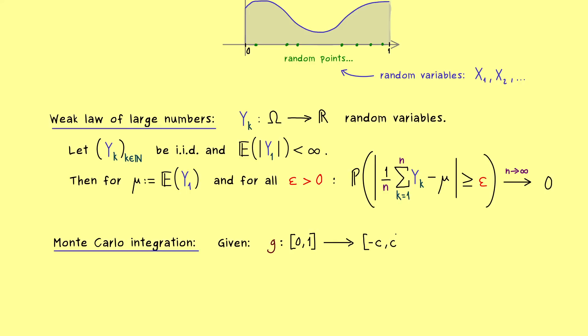And maybe we can also assume it's a bounded function where the bound is given by a number c. Hence we can say it definitely maps into an interval [-c, c]. And now what we want to have is the real number given by the definite integral of g over the interval 0 to 1.